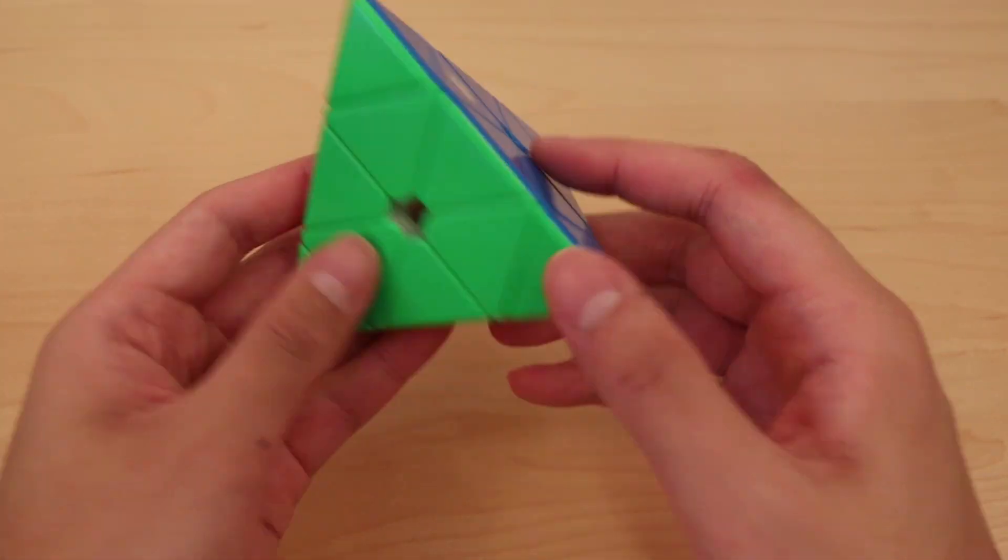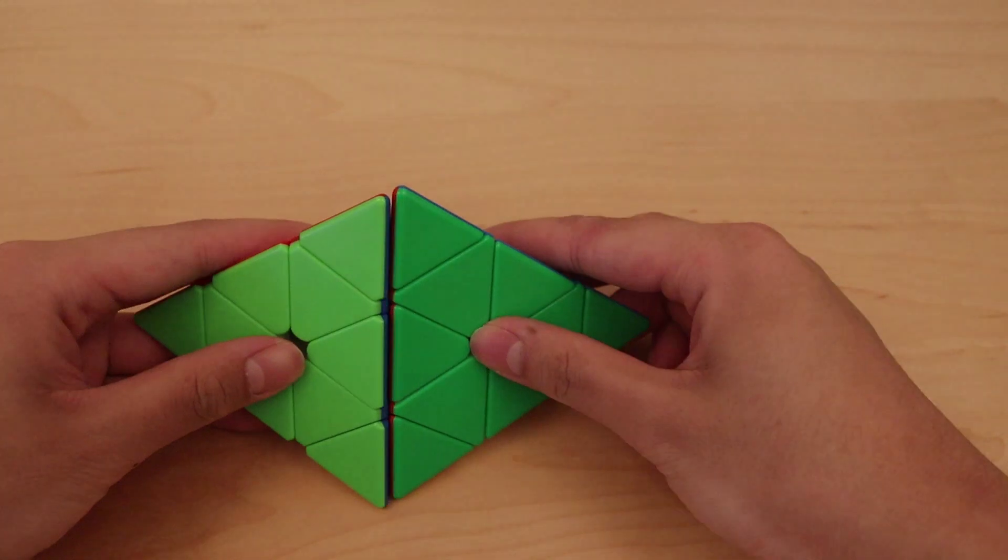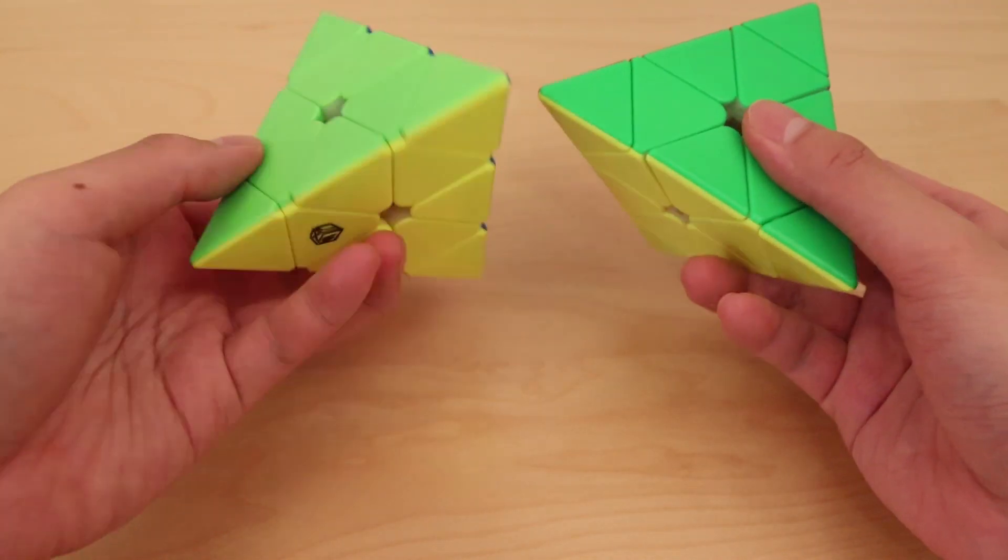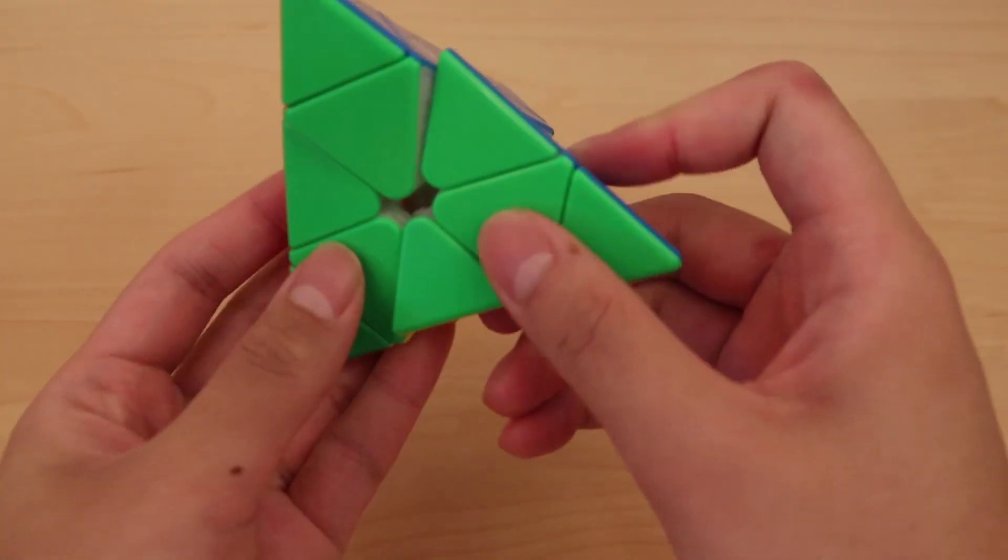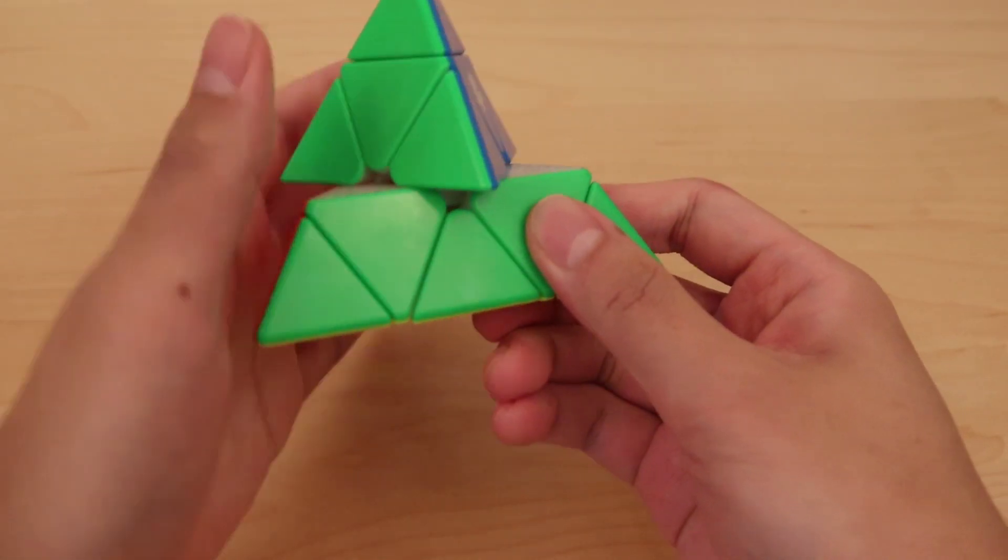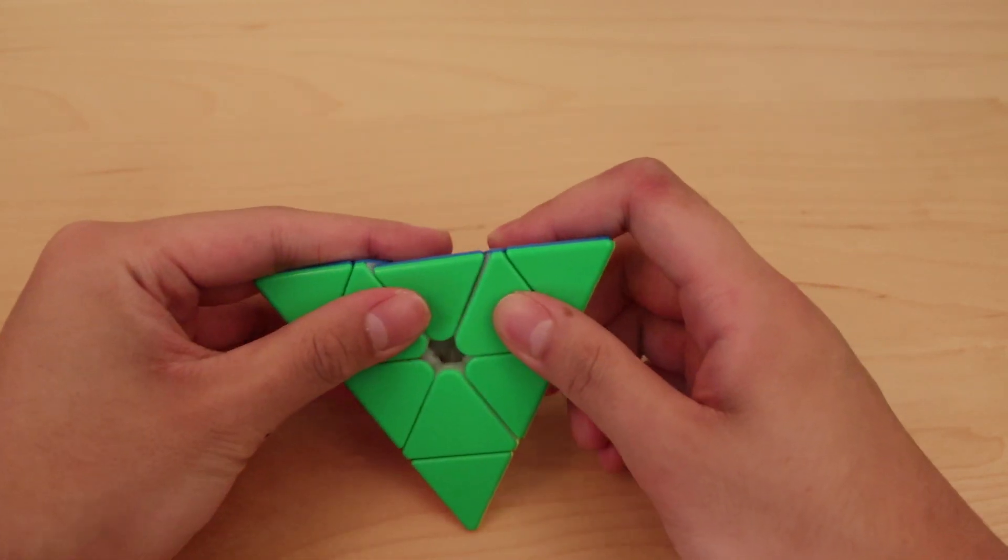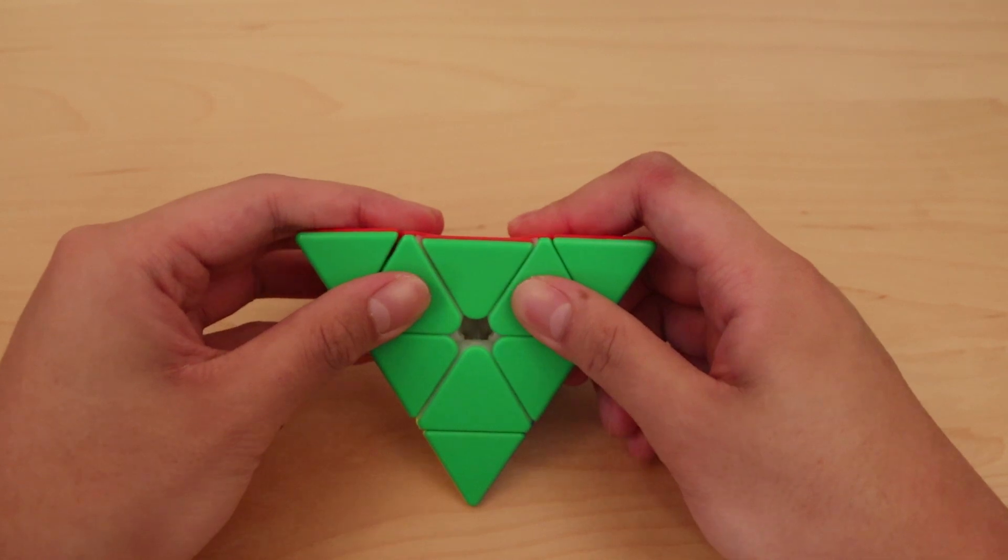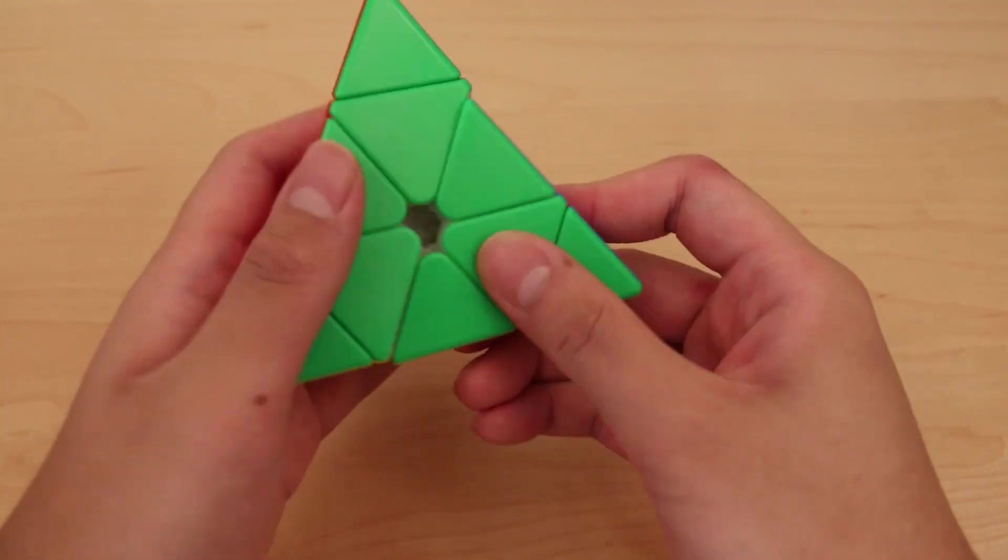I'm going to say this is the best Pyraminx out of the box 100%. Alright size comparison. Yeah around the same. So that shouldn't be much of a problem. The shades are also pretty similar. Maybe not the green. But wow this thing is super impressive. Super nice turning out the box. And also this corner cutting immediately is so good. It's also even not that loose. So that's kind of crazy how good this Pyraminx is out of the box.